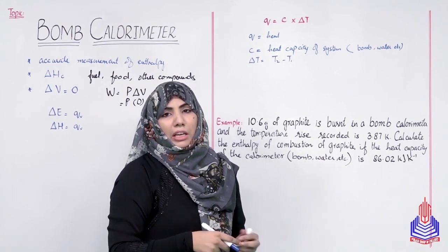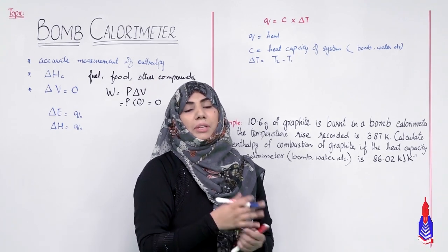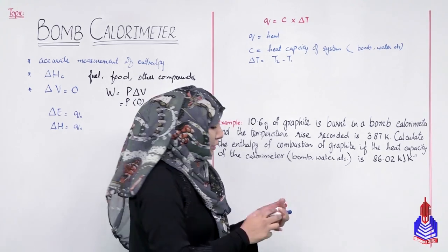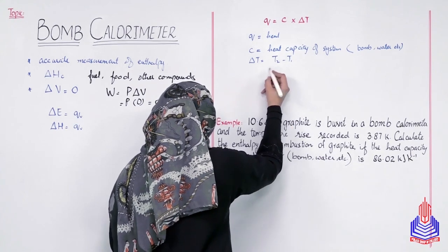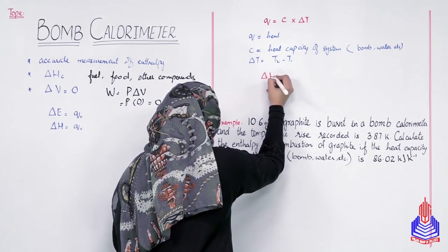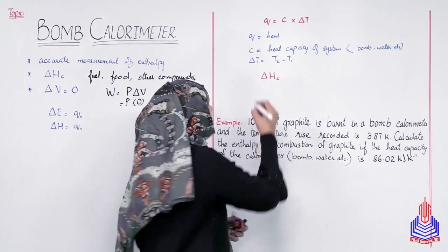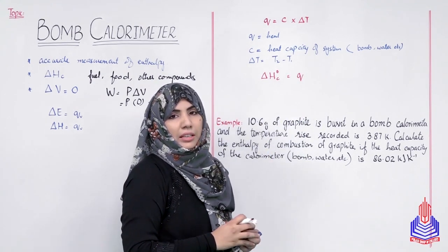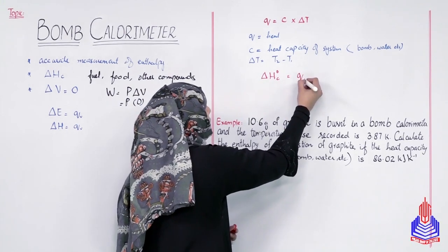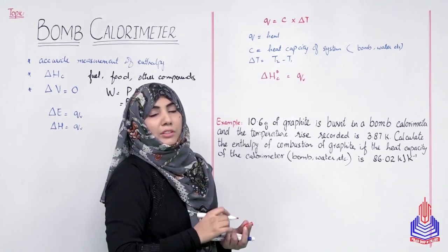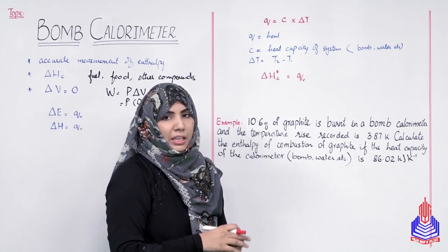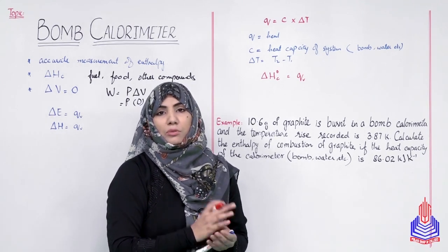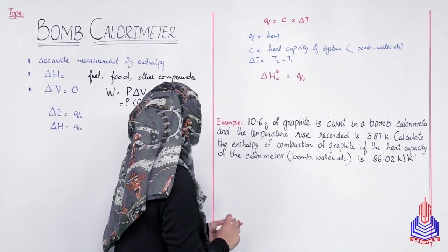Combustion reactions में basically ये exothermic reactions होते हैं, heat जो होती है वो system से बाहर निकलती है। हमारा concept था कि at constant volume, delta H combustion (ΔHc°) किसके equal होगी? Heat of the system के equal हो जाएगी at constant volume। आइए एक example से देखते हैं कि bomb calorimeter में जब reaction होगा तो उसकी values use करके enthalpy of combustion for a specific reaction कैसे calculate करते हैं।